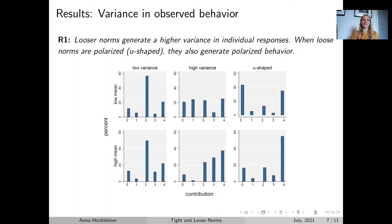Finally, also very interesting when looking at the polarised norm case — here people seem to react quite differently. Some people are focusing on the lower end and contributing nothing, while others are contributing everything. This is quite surprising, because you might think everyone would react in the same way and choose some middle ground. But it seems that people react quite differently to this polarised information, and we find that one mediating factor for this are personal values.